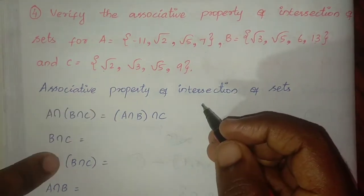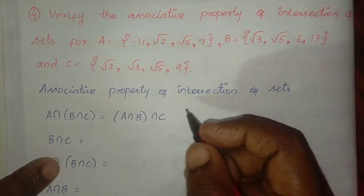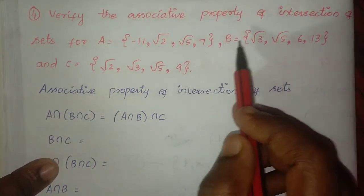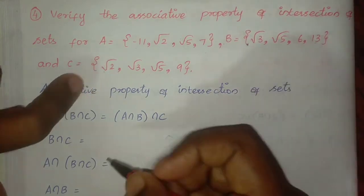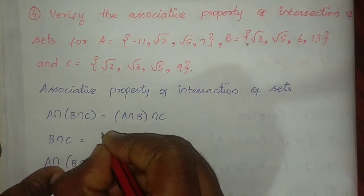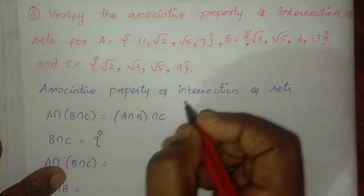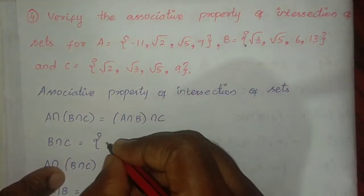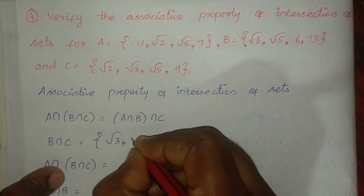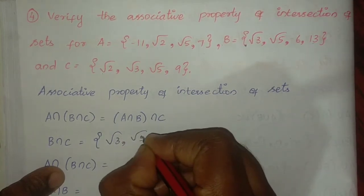Now find B intersection C. Looking at sets B and C, the common elements are root 3 and root 5.